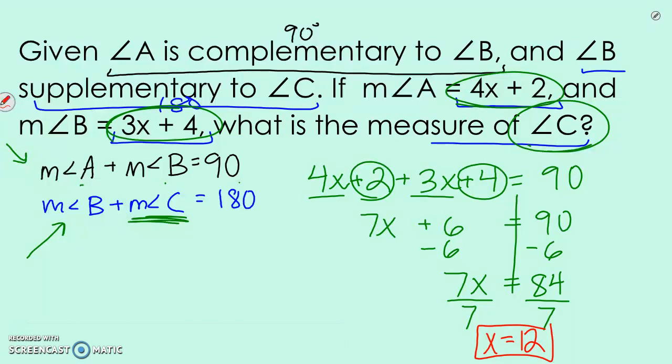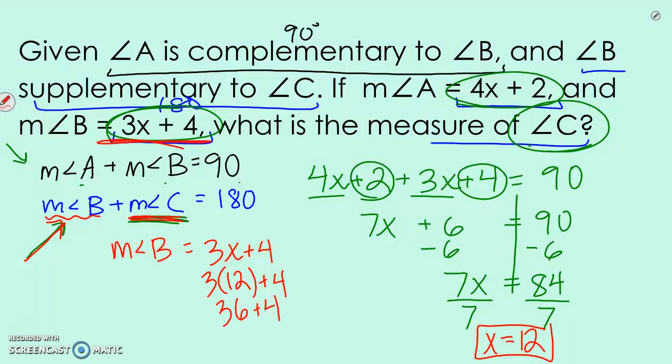So, x is equal to 12. That's great, but that's not an answer. Remember, we want to find the measure of angle C, right? So, how does x equal 12 help us find the measure of angle B? Well, let's go back to what it said here. B is, the measure of angle B is 3x plus 4, and we just said that x is 12. So, the measure of angle B is 40, right?